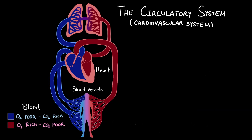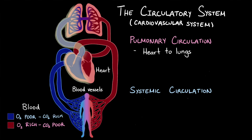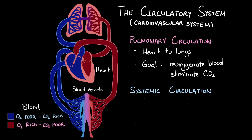The circulatory system has two separate circuits: the pulmonary circulation and the systemic circulation. The pulmonary circulation is the blood flow from the heart to the lungs and then back towards the heart. The main goal of the pulmonary circulation is gas exchange — to expel carbon dioxide from our bodies and re-oxygenate our blood.